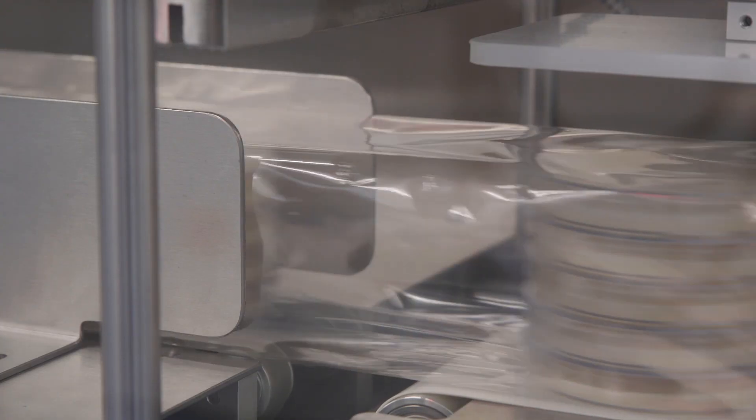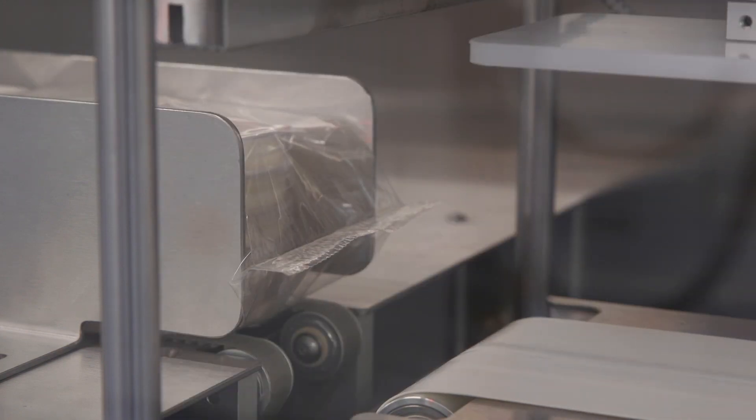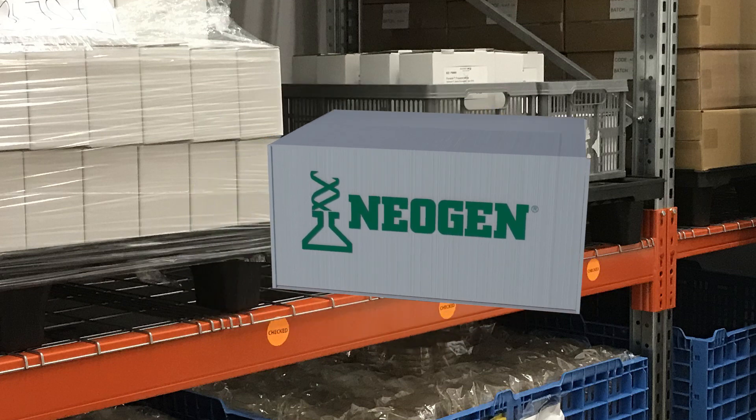The plates are stacked and moved along for packaging. Film wrapping is used to minimise moisture loss and optimise the life of the product. Plates are then boxed and stored in our large refrigerator before they are ready to be shipped.